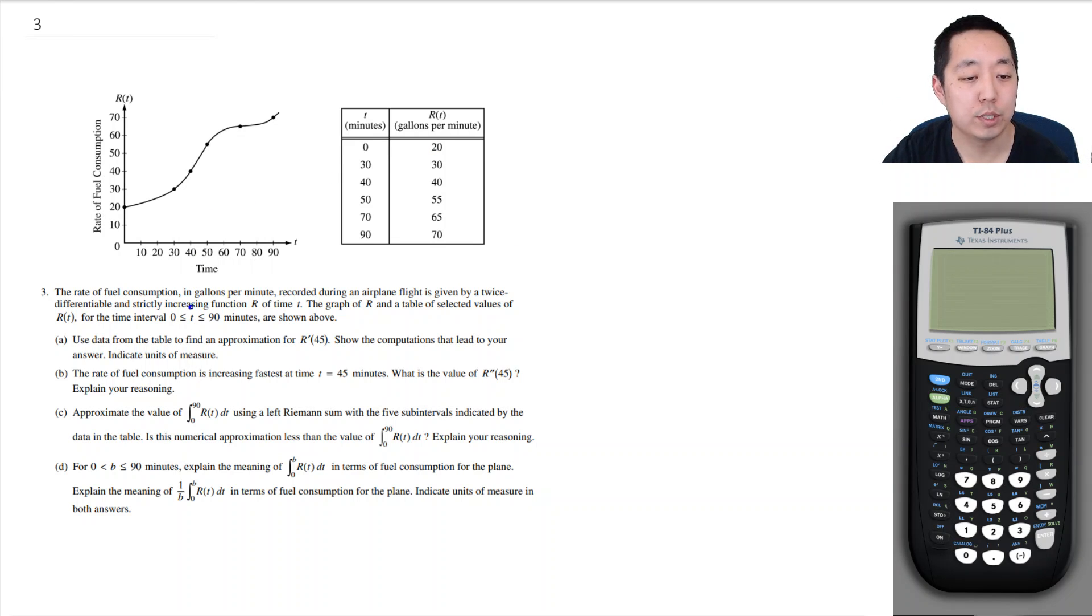So the rate of fuel consumption in gallons per minute recorded near an airplane flight is given by a twice differentiable and strictly increasing function R of time t. The graph of R and a table's selected values R of t.